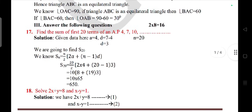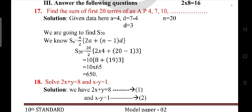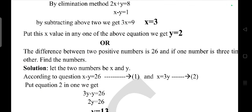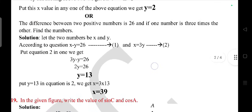Find the sum of the first 20 terms of an AP 4, 7, 10. Solve 2x plus y equals 8 and x minus y equals 1 by elimination method. By eliminating we will get x value 3 and y value equals 2. Or the difference between two positive numbers is 26, and if one number is three times the other, find the numbers.